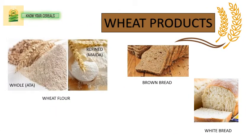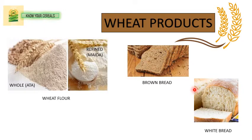Moving on to wheat products. Both atta and maida are wheat products. Atta is the whole ground flour and maida is refined — the husk is refined out of it. Brown bread is made from atta and white bread is made from maida. As you can see the color difference, you can understand the difference between the main ingredient building up these breads.